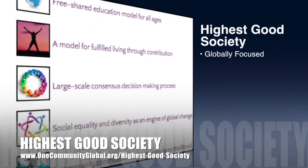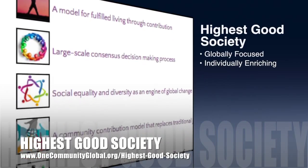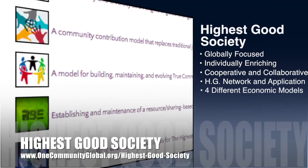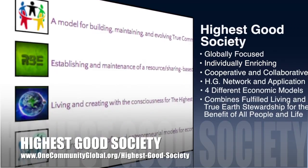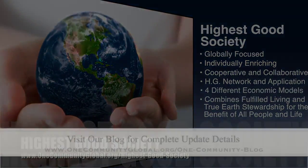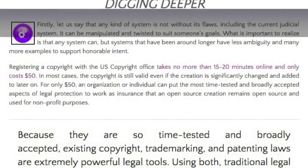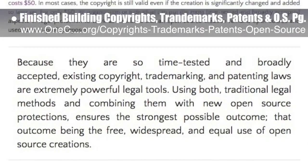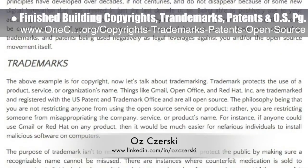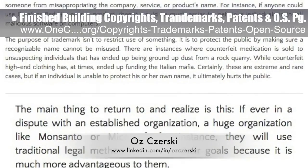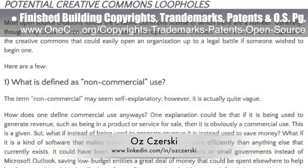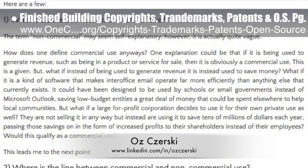One Community's approach to highest good society is globally focused, individually enriching, cooperative and collaborative. It includes a highest good network and application, four different economic models, and combines fulfilled living and true earth stewardship for the benefit of all people and all life on this planet. This last week the core team finished building the copyrights, trademarks, patents, and using them to support open source and free sharing page. This page shares the amazing work of Oz Chersky, a lawyer specializing in trademark and copyright law, and includes final edits and formatting to bring it to 100% complete.